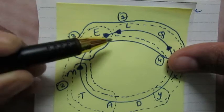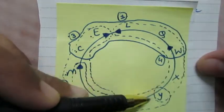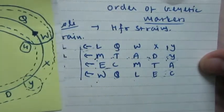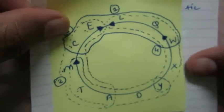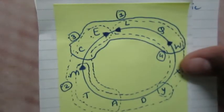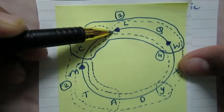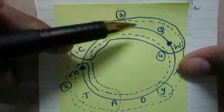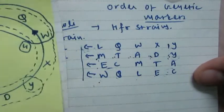In the second strain, M comes first, followed by T A D and Y. So in the second strain, M comes first, so I put arrow key towards M, followed by T A D and Y. This is the second strain. In the third strain, E comes out first, followed by C M T and A, so I put an arrow key towards E.